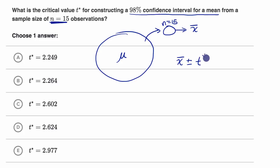So it's going to be T star times the sample standard deviation divided by the square root of our sample size, which in this case was going to be 15. So the square root of n.